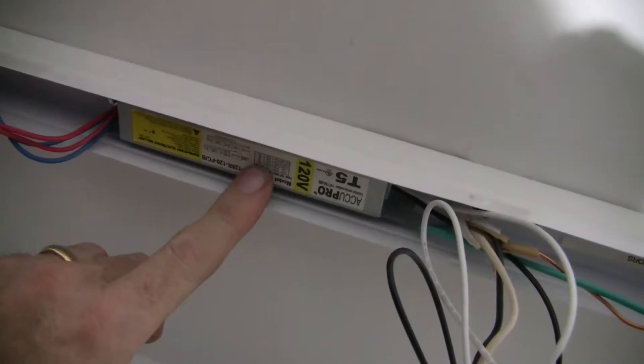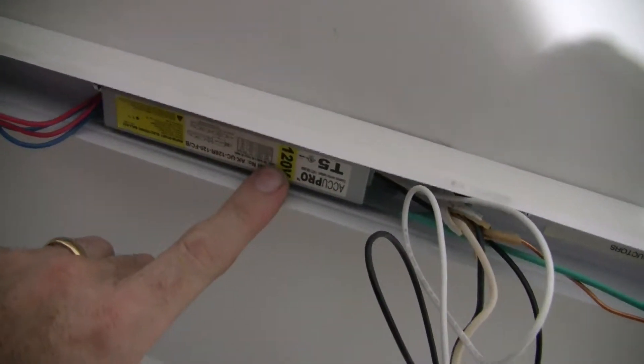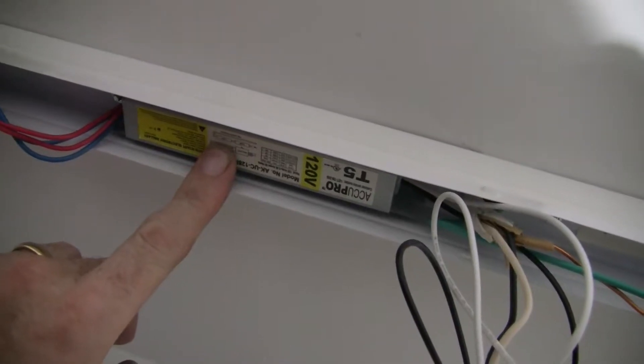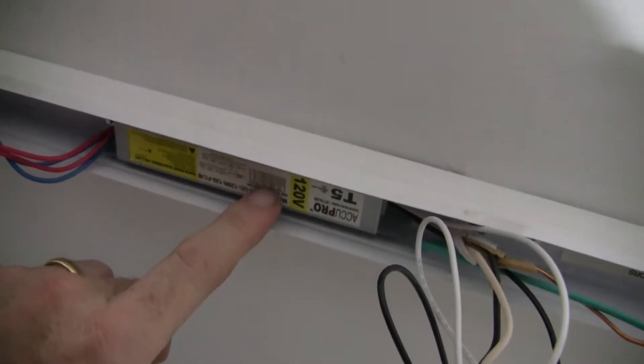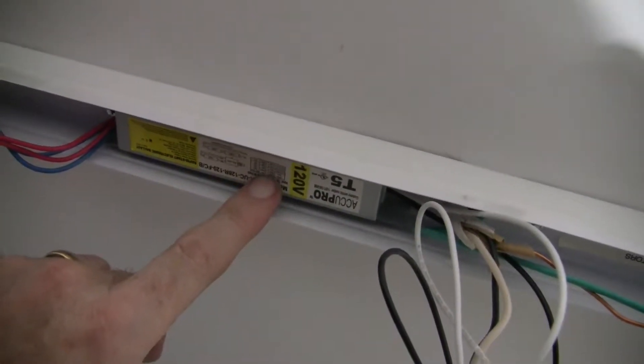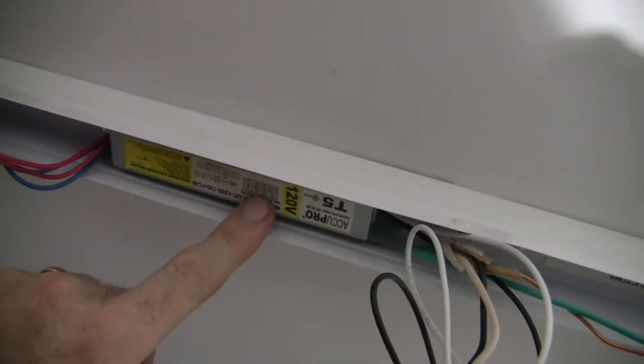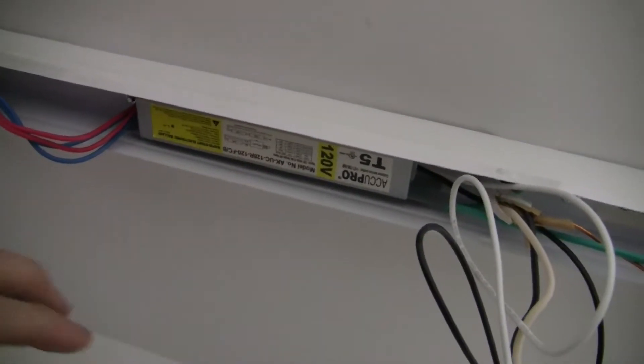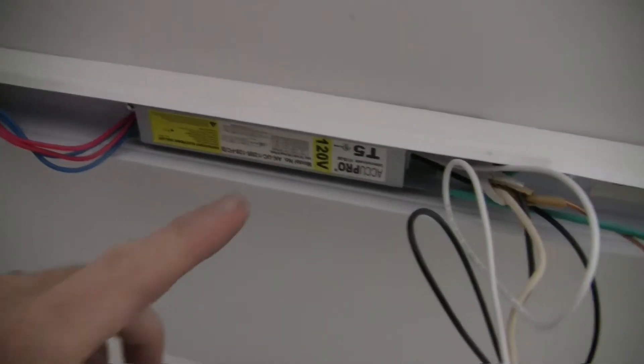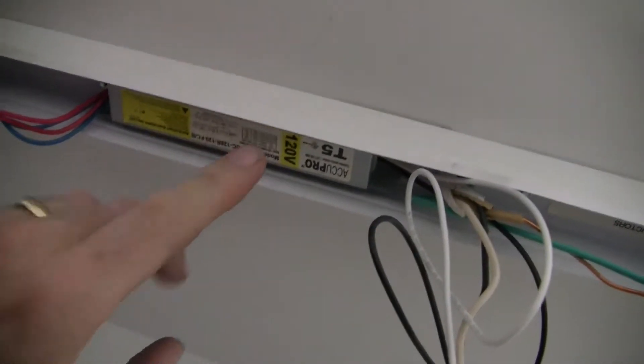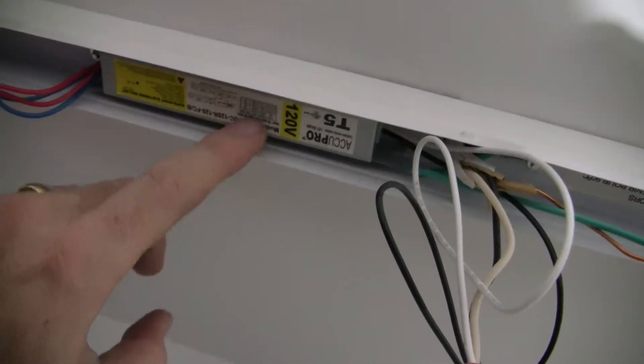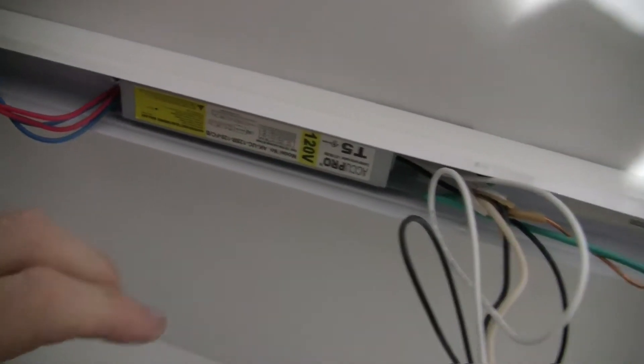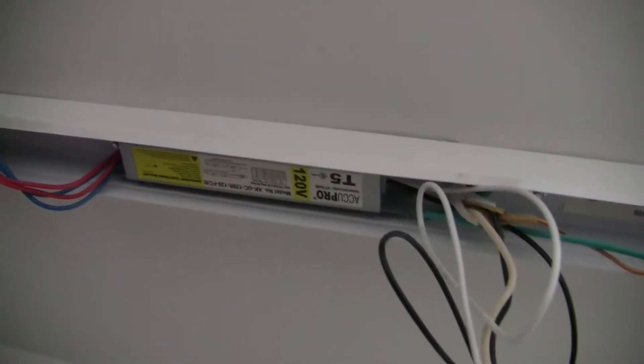Make sure you get a ballast that exactly matches voltage and the wattage and the lights that it can handle. And the wattage of the lights that it can handle and how many it can handle and how it's wired. Those are the important things to look at. Make sure you get the exact same ballast. It can be from a different company, but it's got to have the same standards and the same wattage and cover the same number of lights.